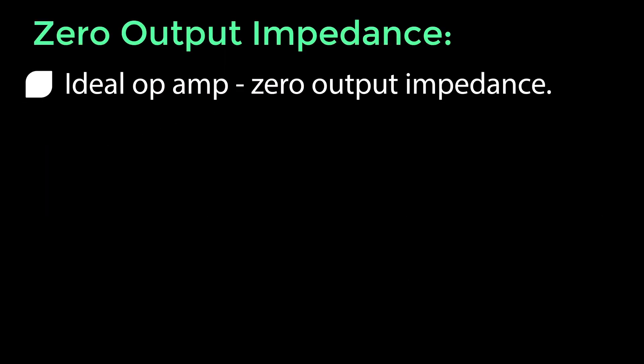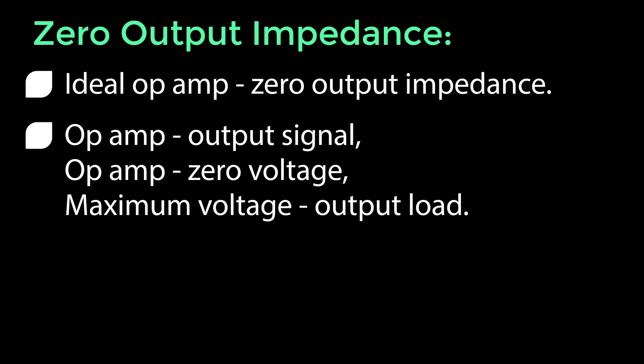Zero output impedance. An ideal op-amp will have zero output impedance. When an op-amp produces its output signal, we want the op-amp to have zero voltage so that the maximum voltage will be transferred to the output load.